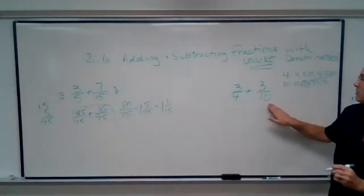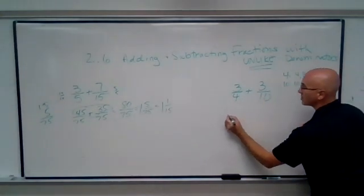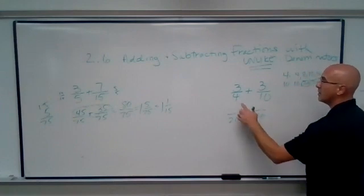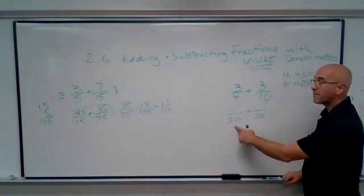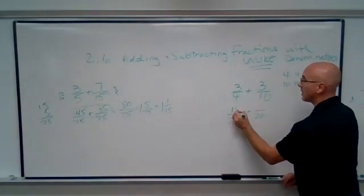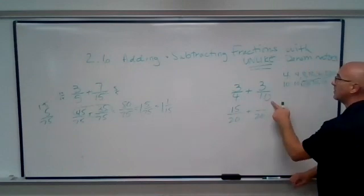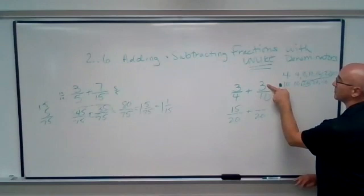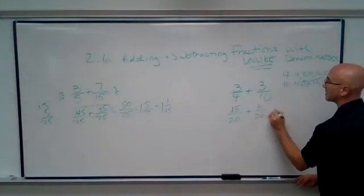So we're going to convert each of these fractions to 20. To get from 4 to 20, we're multiplying by 5, so we're going to do the same thing with the 3. 3 times 5 is 15. To get from 10 to 20, we are multiplying by 2, so we will do the same thing. 3 times 2 is 6.